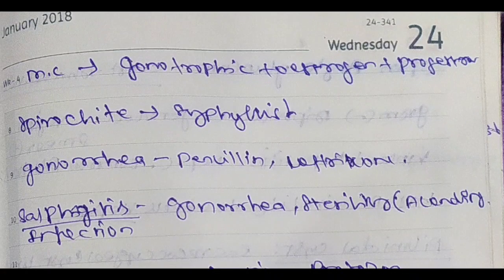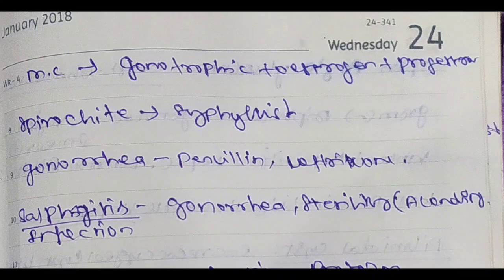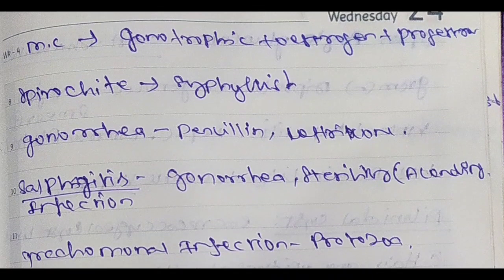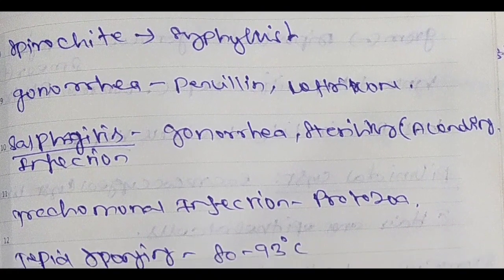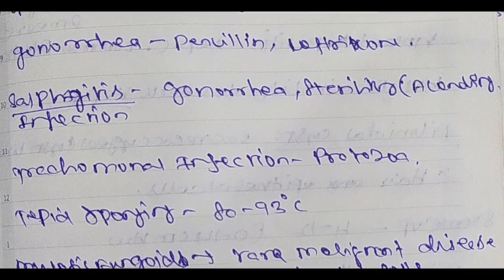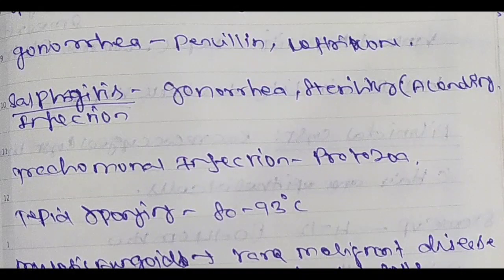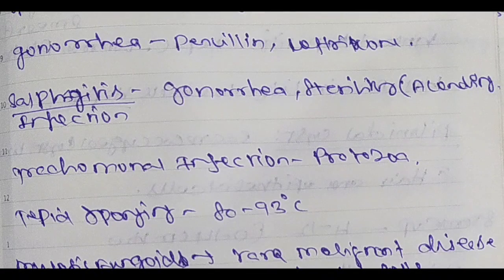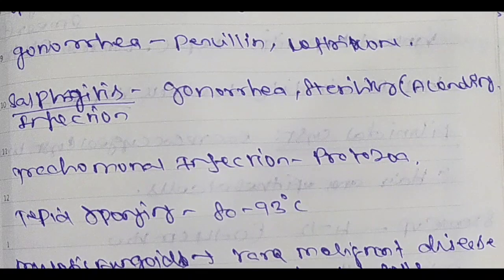Syphilis — then gonorrhea: drug of choice is benzathine and ceftriaxone. Salpingitis infection from gonorrhea — so salpingitis from gonorrhea leads to sterility. Ascending infection — gonorrhea causes sterility. So this is interrelated.